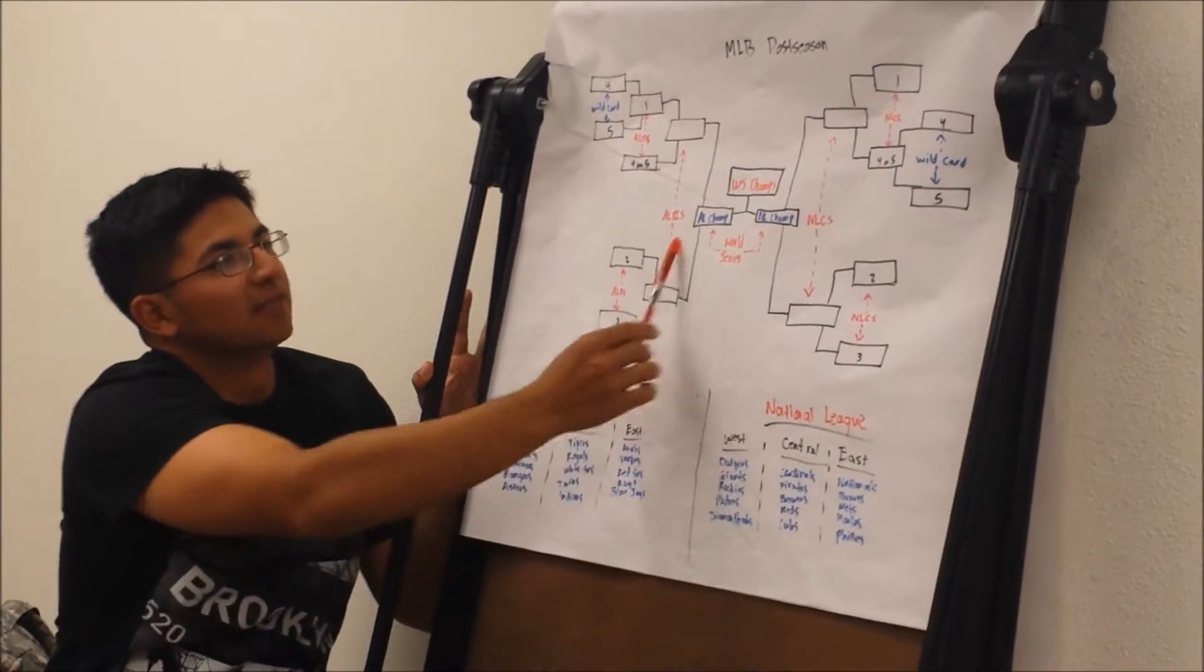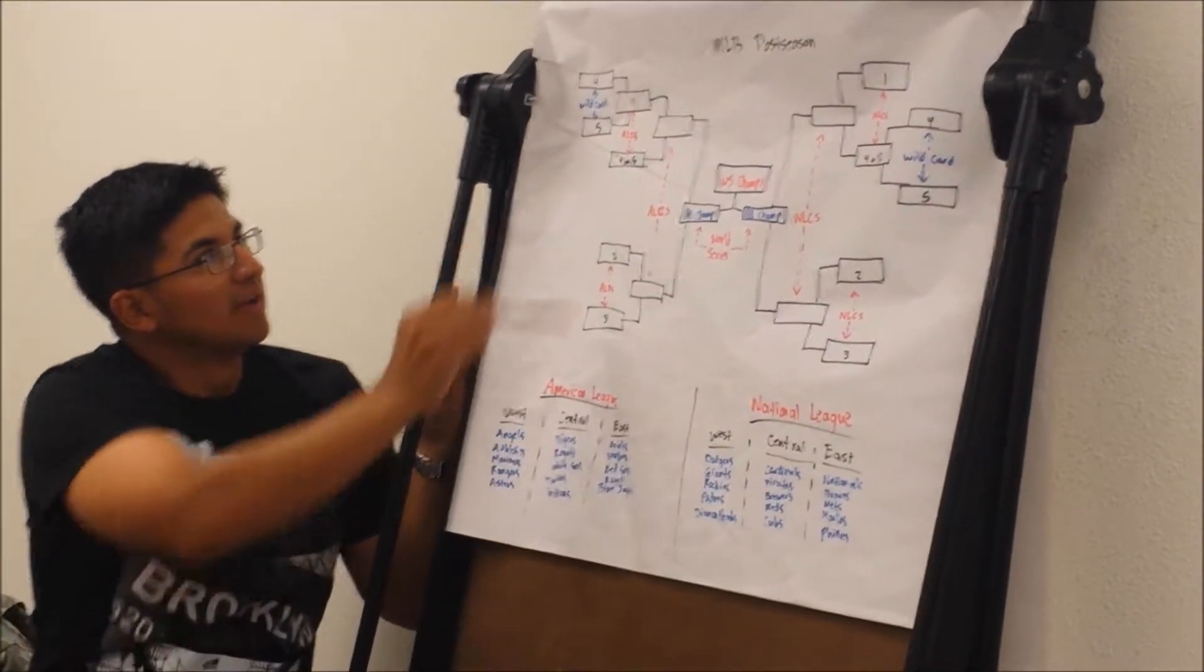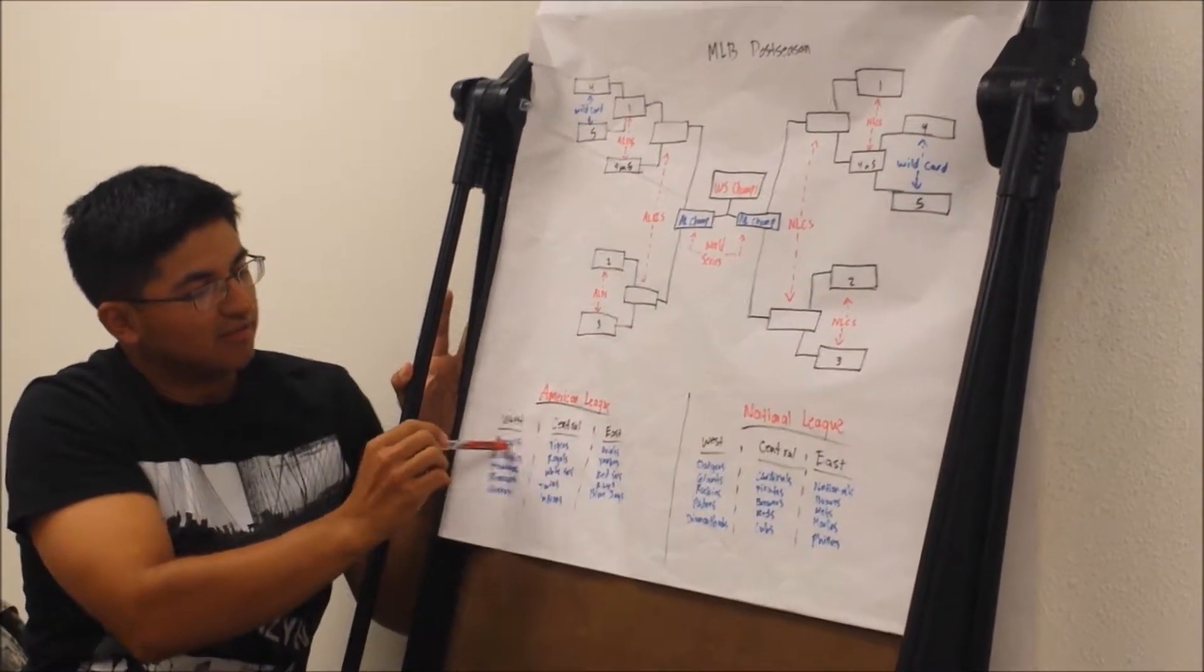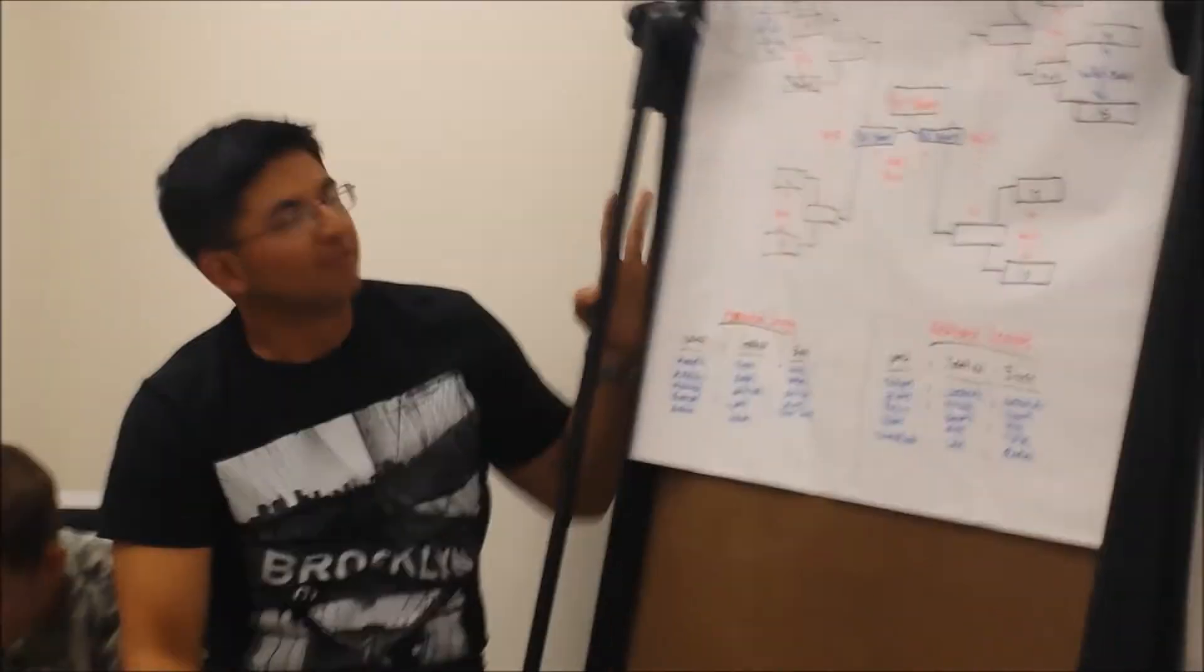Same thing for National League. Right here, the brackets are mirrored. So, 1, 2, and 3 are obviously determined by the winners. And 4 and 5 are determined a little differently.